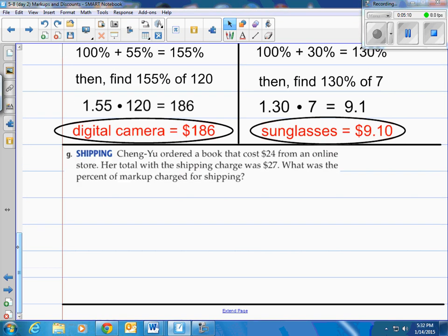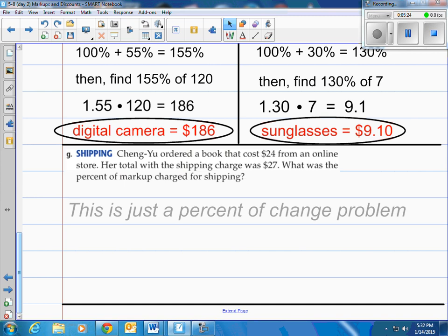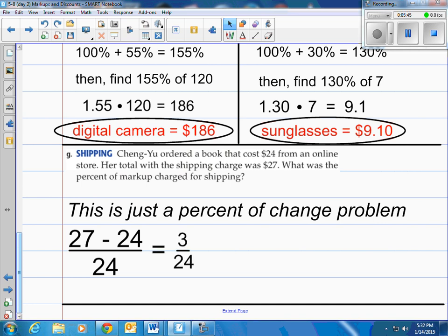How about G? Cheng Yu ordered a book that cost $24 from an online store, total with the shipping charge was $27. What was the percent of markup charged for shipping? Now, this is just a percent of change problem that you've done previously. So we need to find the original and the new price, or the ending price in this case, subtract those two and then divide by the original. That means we have to take the 27 minus the 24, put that all over the 24 where it started from. So we have 3 over 24, which is the original. When you take those two, divide them, it's 0.125, change it to a percent. We have a 12.5% markup for the shipping charge.